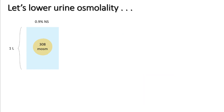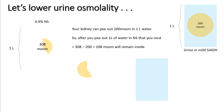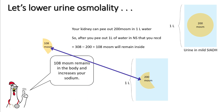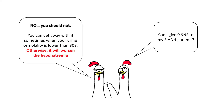Now consider a patient with mild SIADH and urine osmolality of only 200 mOsm/L. Their kidneys excrete 200 mOsm per litre of urine. From one litre of saline delivering 308 mOsm, 200 mOsm is excreted and 108 mOsm remains inside — actually increasing sodium. So can you give normal saline to an SIADH patient? If urine osmolality is above 308, you will get into trouble; if it is below 308, you may get away with it.